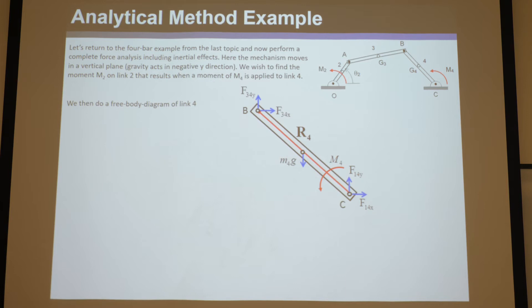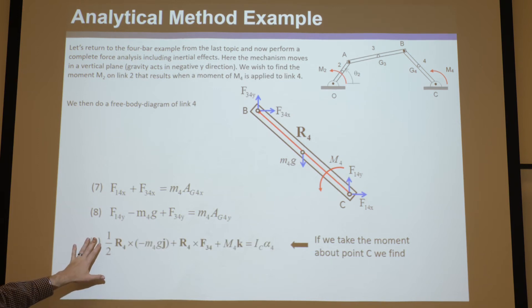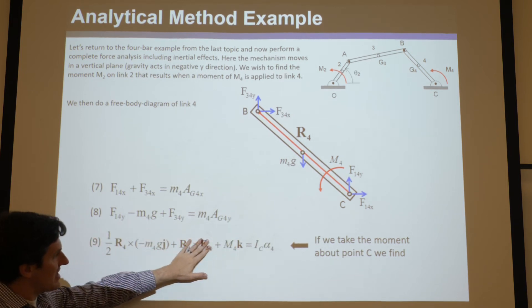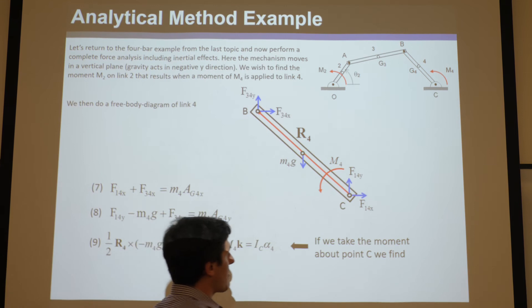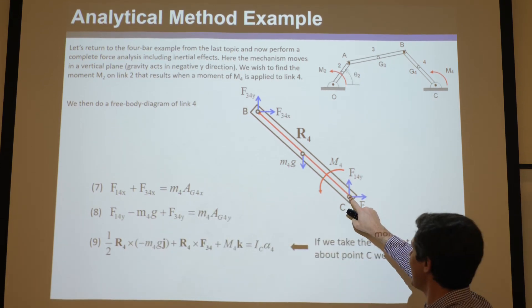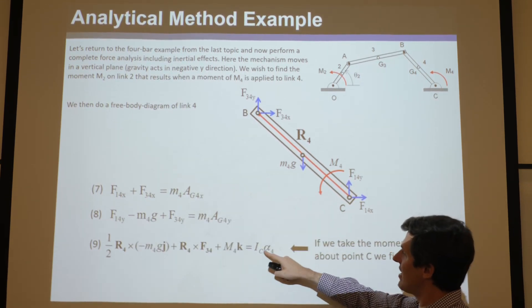And then same thing for four. You go through, you do the two x and y components, and in this case, we took the moment about C, which is not a bad point because it's what we did last time. But really the nice thing is, remember, the acceleration at C is zero, so the whole other part of this cuts off, and you just have the moment of inertia about C.